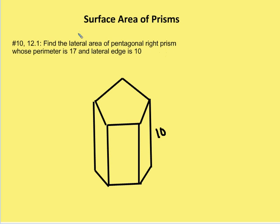In the final question, number 10, we're asked to find the lateral area of a pentagonal right prism whose perimeter is 17 and the lateral edge is 10.